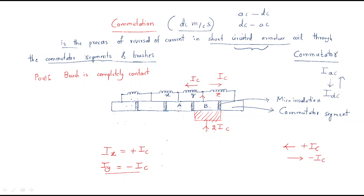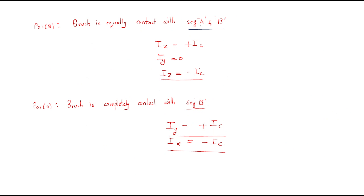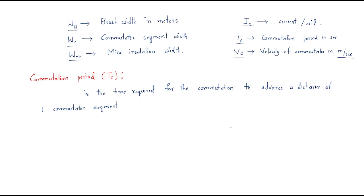We discussed three positions. First, when the brush is completely in contact with segment A, the IX coil current is +IC and IY coil current is −IC. Second, when the brush is equally in contact with both AB segments, IX current is +IC and IY current is 0. Third, when the brush is completely in contact with segment B, IY equals +IC.